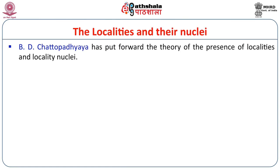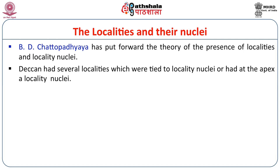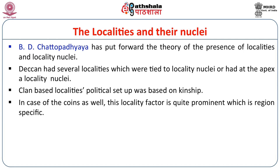B.D. Jattupadhyay has put forward the theory of the presence of localities and locality nuclei. Deccan had several localities which were tied to locality nuclei, or had at the apex a locality nuclei. These are basically clan-based polities. Jattupadhyay gives the example of the Bhatti Prolu relic casket wherein you find Kuberaka as a Rajan. At the same time, Kuberaka is also mentioned as the Pramukha of the Singha Ghoshthi. Ghoshthis are clans and these clans also had a leader. Among several Ghoshthis and leaders, you finally get a superior person who is the leader of several Ghoshthis — this person is actually the Rajan.